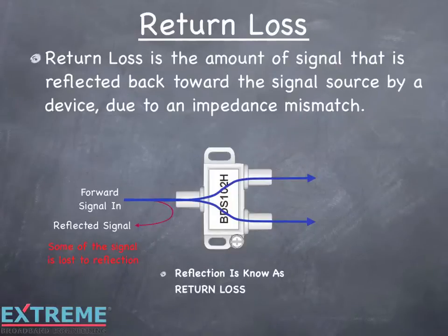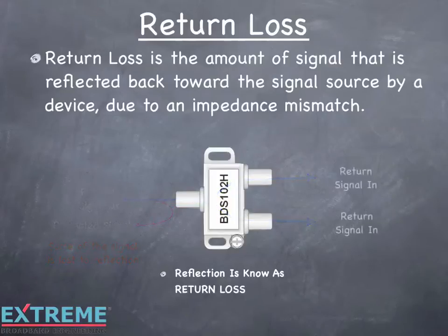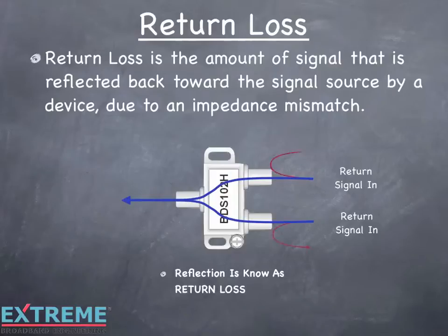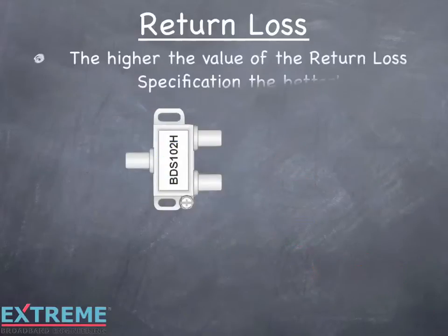Return loss is a factor with both the input and output F ports. In this example, we're showing return signals feeding into the output ports. Ideally, we'd like all the signal to flow through the splitter to the input port, but in reality some of the signal is reflected back towards the signal's original source. With return loss, the higher the value of the return loss specification, the better.